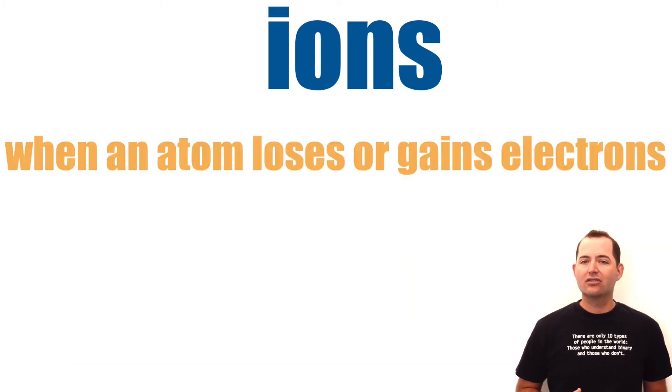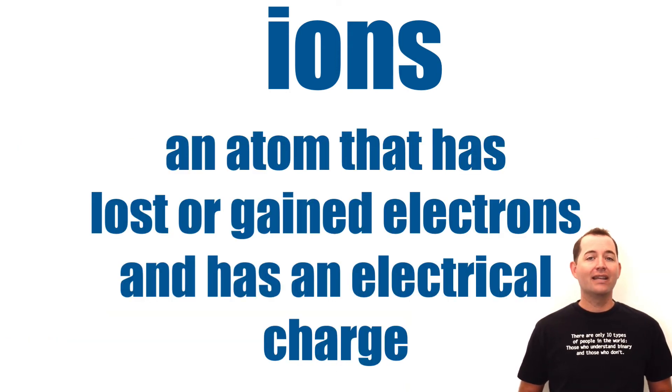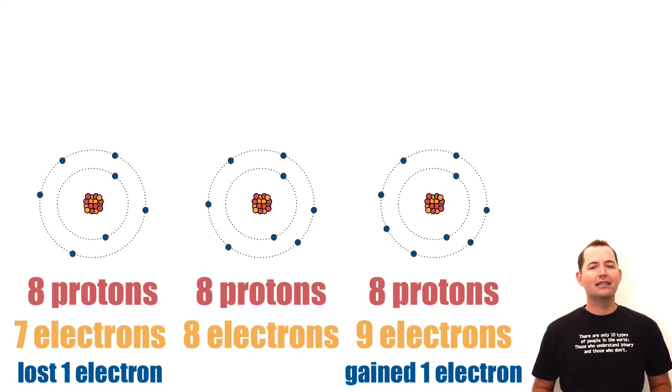When an atom loses or gains electrons, it will have a positive or negative charge. This is an ion, or an atom that has lost or gained electrons, and would have either a positive or negative charge.